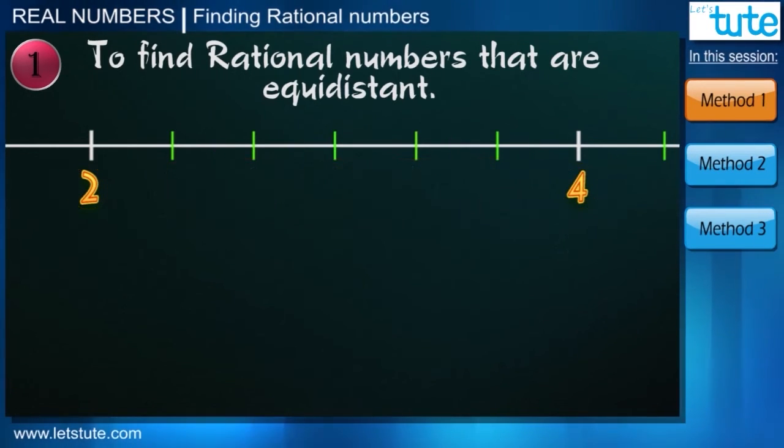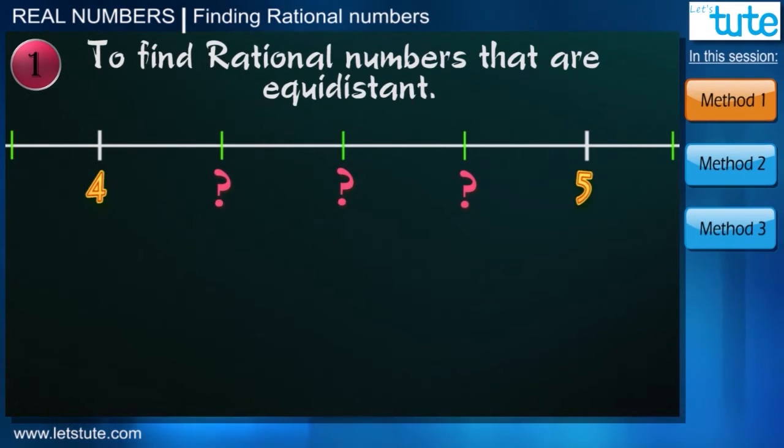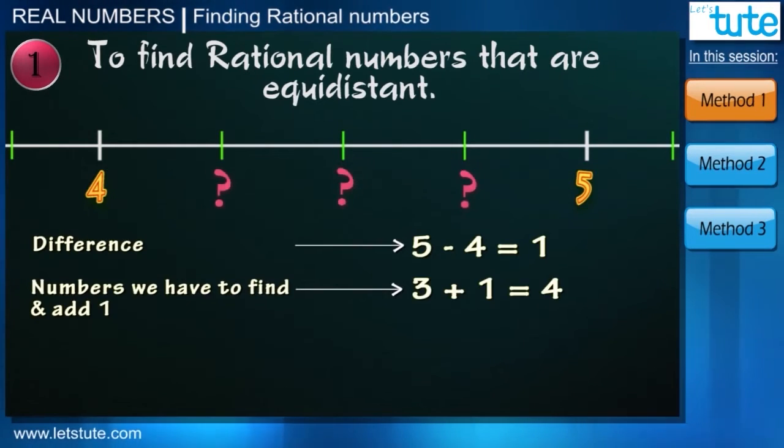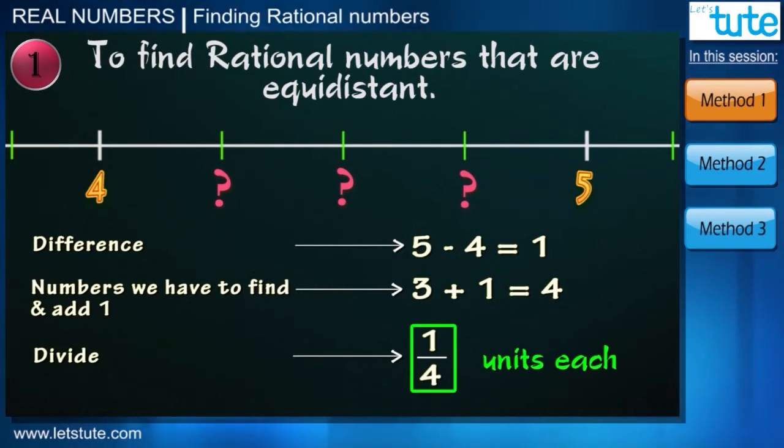So in the same way, can you find 3 numbers between 4 and 5? As we did before, we first find the difference between the two numbers. Then we see how many numbers we have to find and add 1 to it. Now divide the difference by the number we get after adding 1. So the three numbers that we will find will be at distance 1 upon 4 units each.